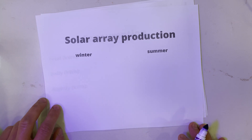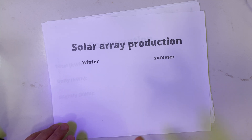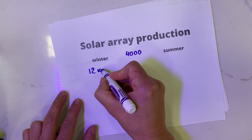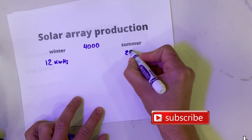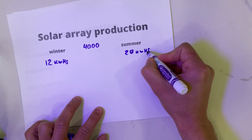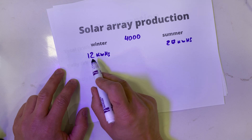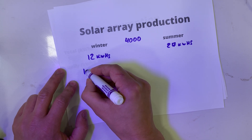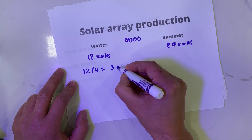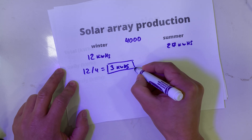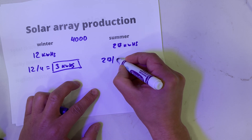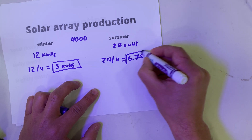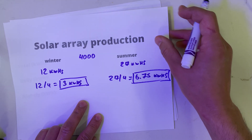Based on the screenshots, we can calculate how many kilowatt hours we get from one kilowatt of solar panels. Our array is 4000 watts. In winter we get about 12 kilowatt hours per day, and in summer about 27 kilowatt hours per day. Dividing 12 by 4 gives us 3 kilowatt hours per day per kilowatt of panels — we'll use this for our calculation. In summer, 27 divided by 4 gives us 6.75 kilowatt hours per day per kilowatt of panels.